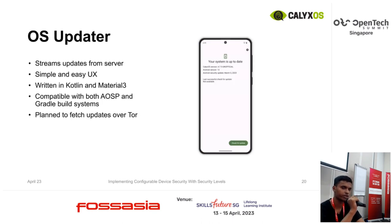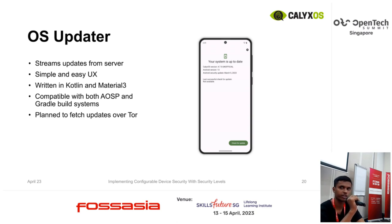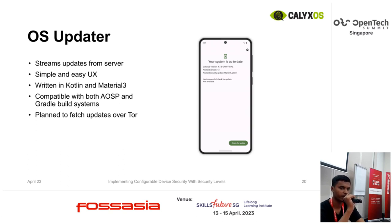Then there is the OS updater that we are working on. The OS updater simply streams the updates from the CalXOS servers to your CalXOS devices — there is no download step, so there is no requirement for extra storage space. They are using the update engine APIs from Google. Since it just streams updates, it's also a return-copy approach and very simple. There are just two screens — one visible on the main screen and a settings screen which allows you to change your update channel, scheduled update times, and other settings. This is also compatible with both AOSP and Gradle, which means any developer can simply clone it and start working. We are also planning to fetch system updates from a privacy-respecting source for privacy and security purposes.